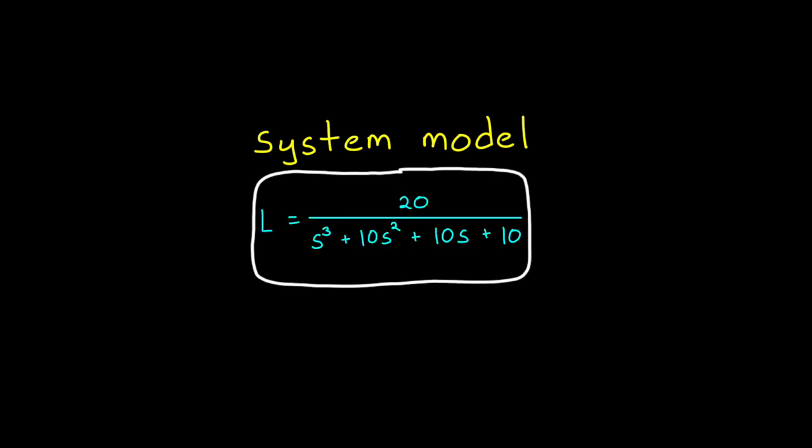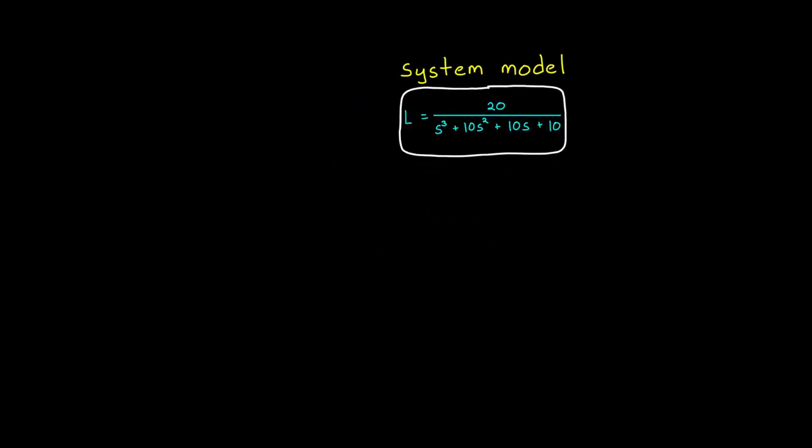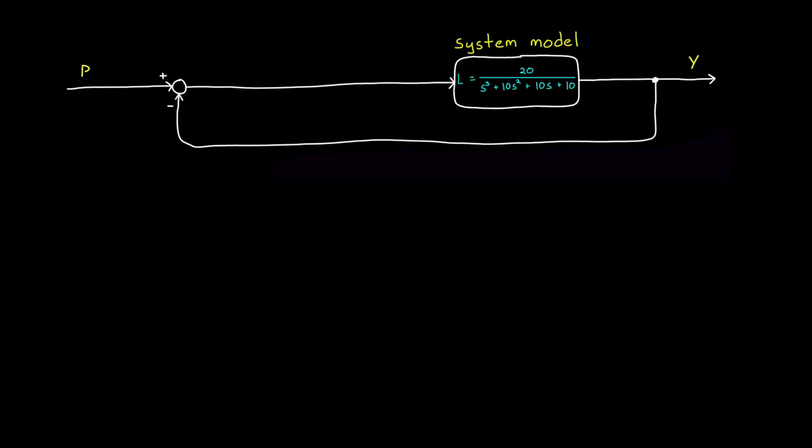Let's say that we have a system model which we'll call L. L represents the open-loop response of the real plant and any controllers and filters that are in line with it. So it's the open-loop response of the ideal system that you want to implement. And as we discussed in the last video, this model won't perfectly match the real system.